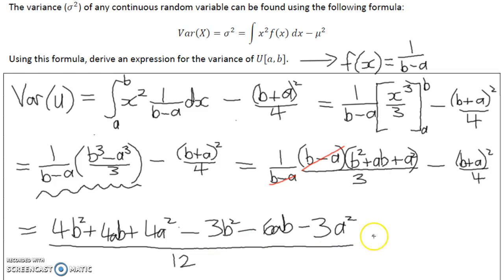Collecting like terms, we have 4b squared take away 3b squared, which is b squared. We've got 4ab take away 6ab. We've got 4a squared take away 3a squared, which is positive 1a squared.